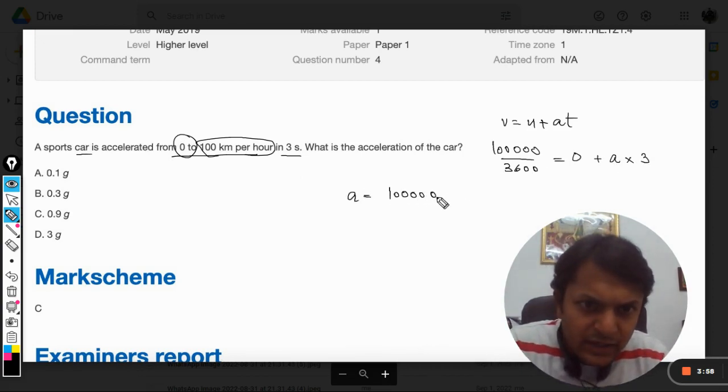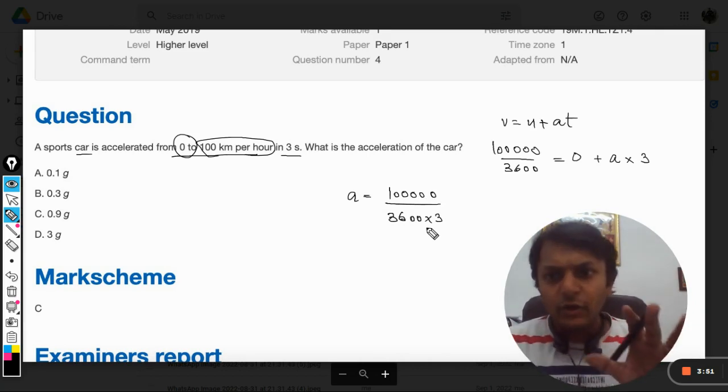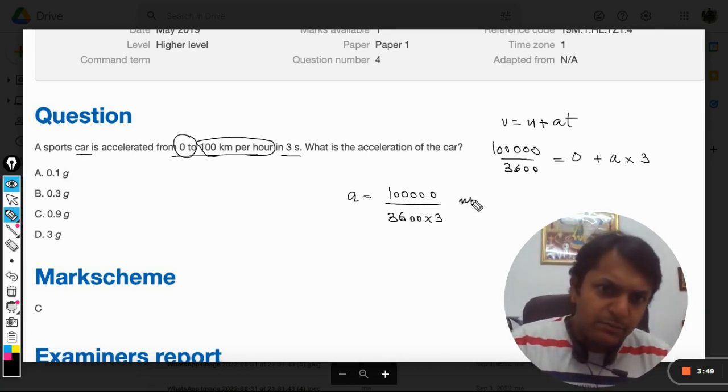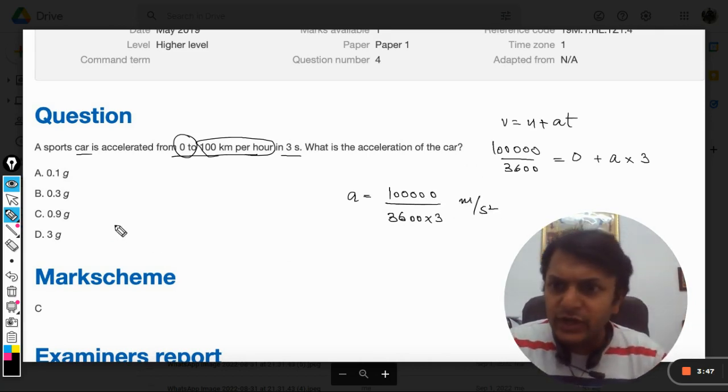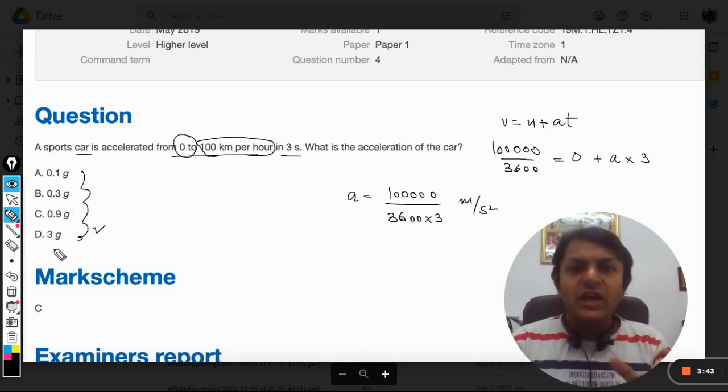That will be, well if we don't make any mistake in the calculation, it will be this. We are not solving it now. This is acceleration in meters per second squared. But the answer is given in terms of g.